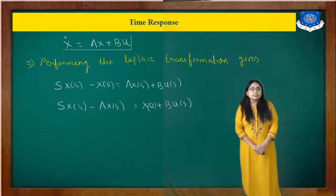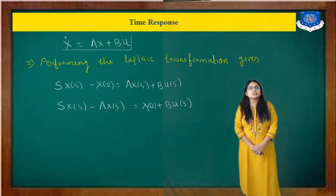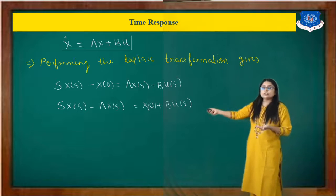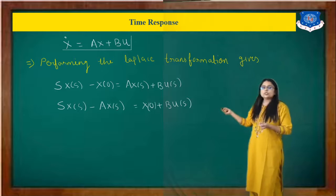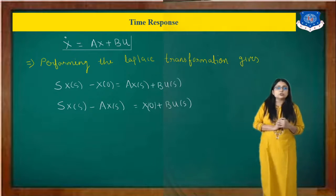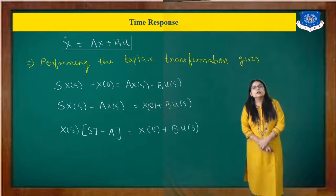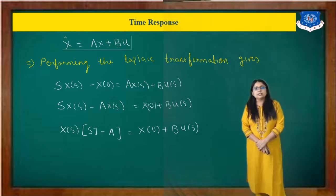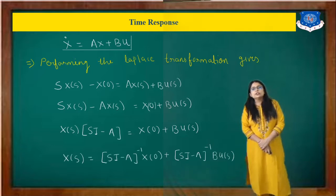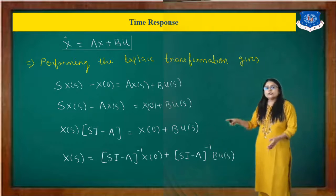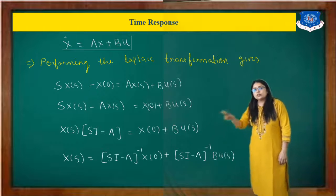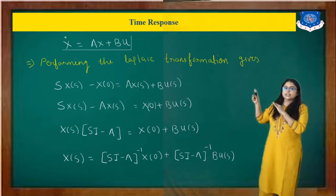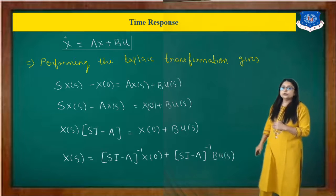Note that we cannot set x(0) equal to zero here, because we are not finding the transfer function — we only set initial conditions to zero when finding the transfer function. Taking X(s) common gives (sI minus A)·X(s) equals x(0) plus B·U(s). Dividing both sides by (sI minus A), we get X(s) equals (sI minus A)^(-1)·x(0) plus (sI minus A)^(-1)·B·U(s).